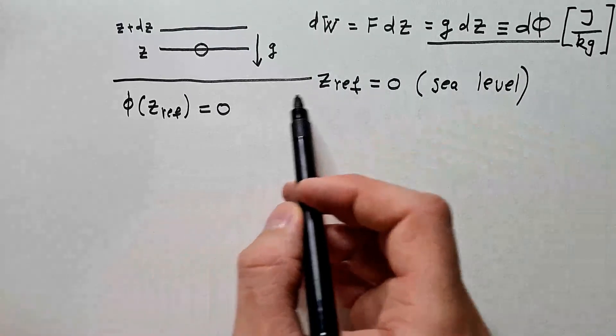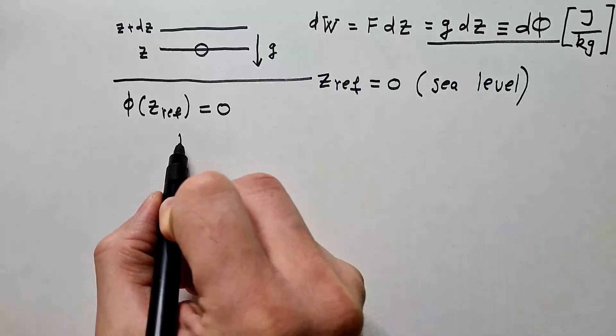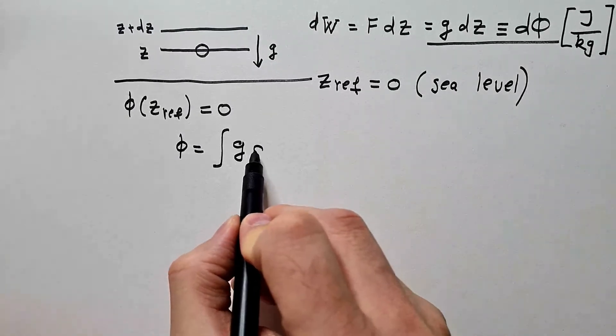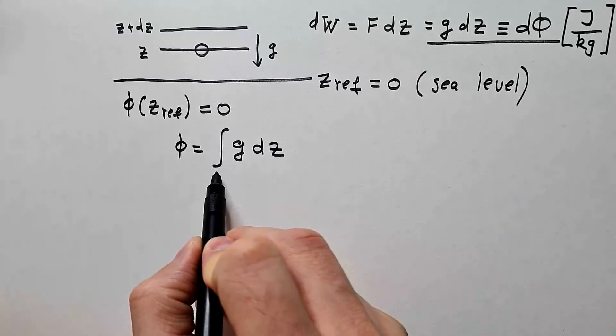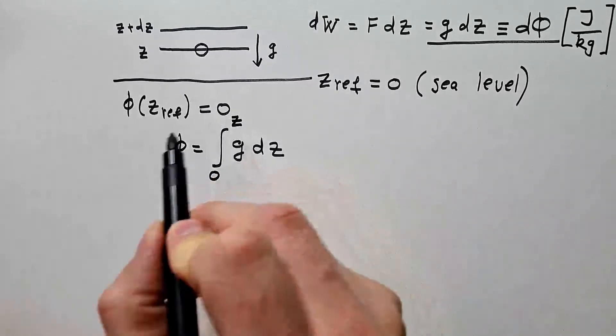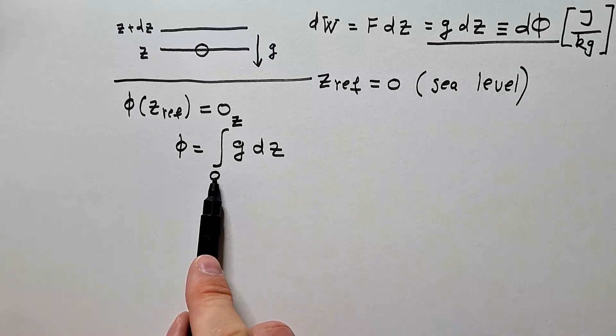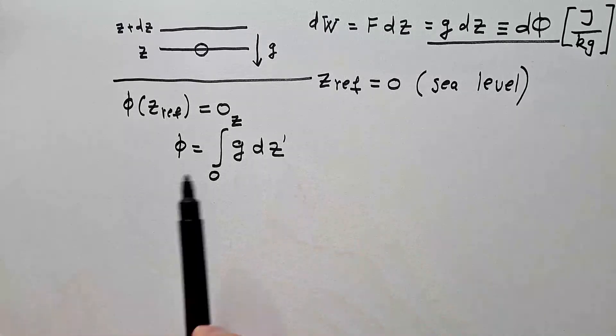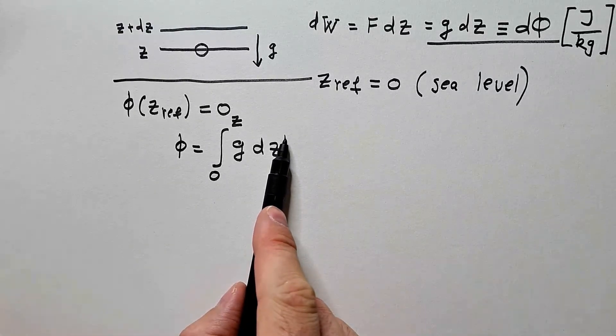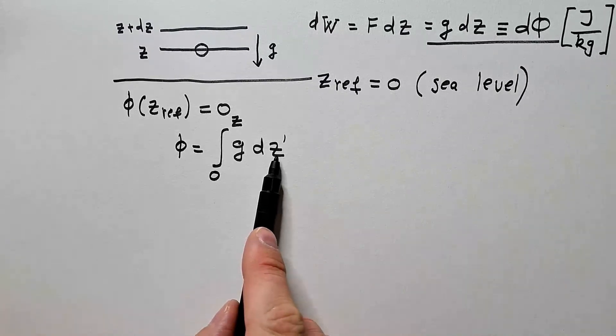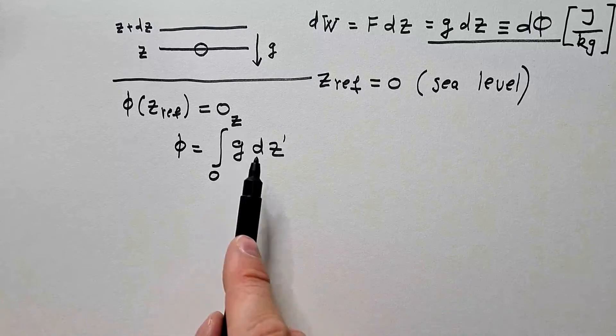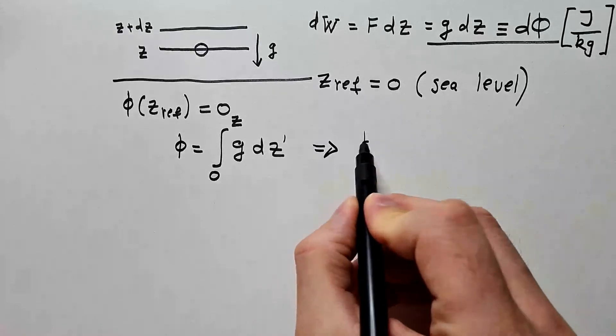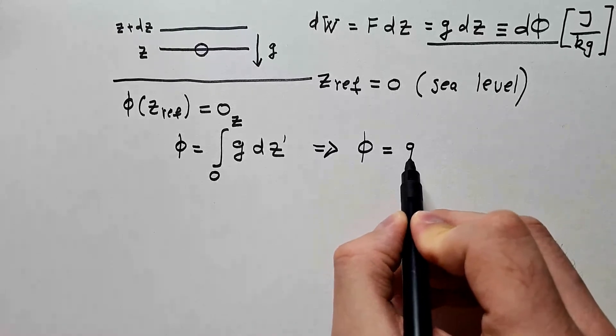So, using this equation and this convention, we can say that geopotential is integral g dz between zero and z. So we are integrating from reference height, which is zero, to some height z. To be very formal, mathematically, I should introduce here some prime or anything, because mathematically, we shouldn't have the same variable under the integral and as the integral limit, this is called dummy variable and it will be integrated out. So if we solve this integral, we see that phi is g z.